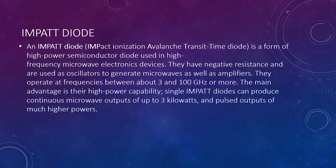Next is the IMPATT diode, a form of high-power semiconductor diode used in high-frequency microwave electronics devices. They have negative resistance and are used as oscillators to generate microwaves as well as amplifiers. They operate at frequencies between about 3 and 100 GHz or more. The main advantage is their high power capability. Single IMPATT diodes can produce continuous microwave outputs of up to 3 kW and pulse outputs of much higher powers.